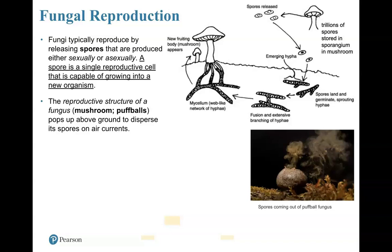Fungi typically reproduce by spores. Spores are produced either sexually or asexually. So what's a spore? A spore is a single reproductive cell that's capable of growing into a new organism.